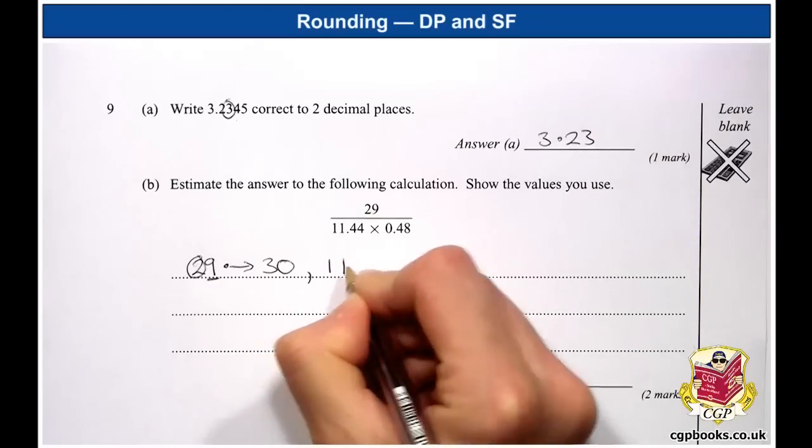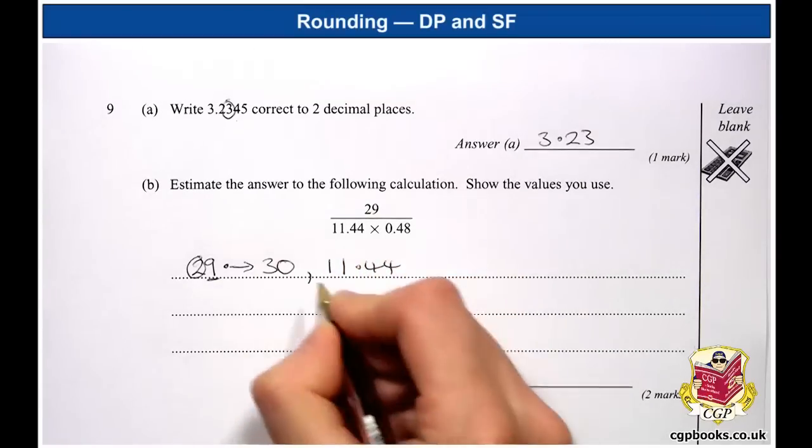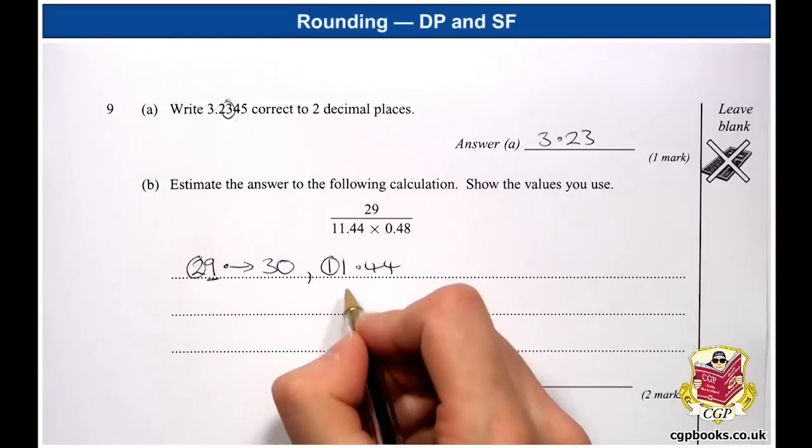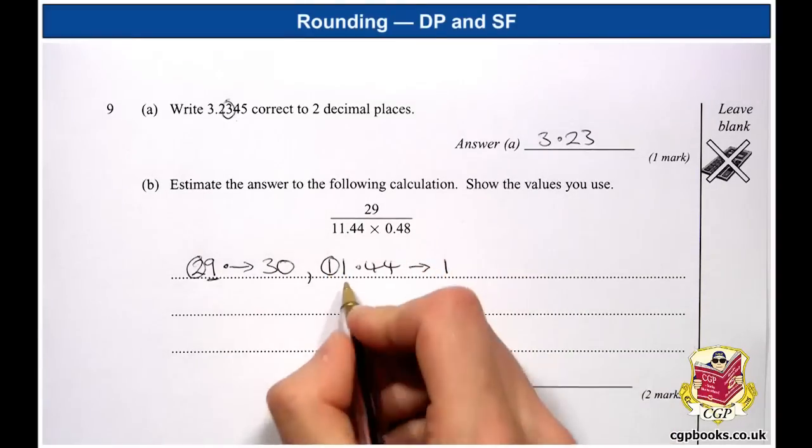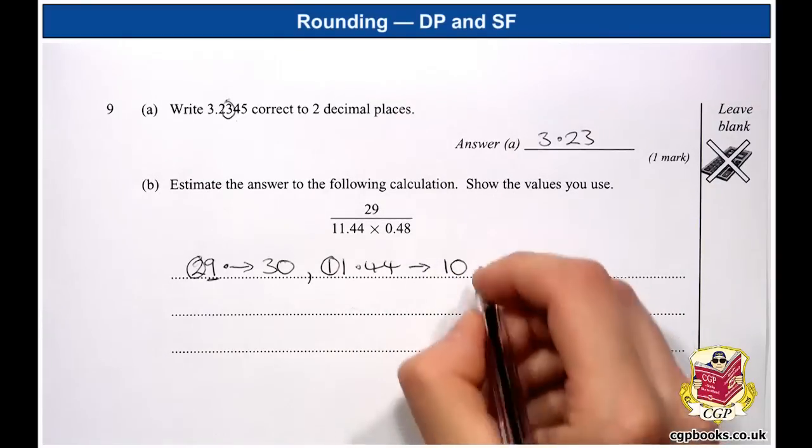OK, 11.44. Again, this is the last digit. The decider is 1, so we keep our 1. And again, we've got a gap to fill in, so we add a 0 to get 10.